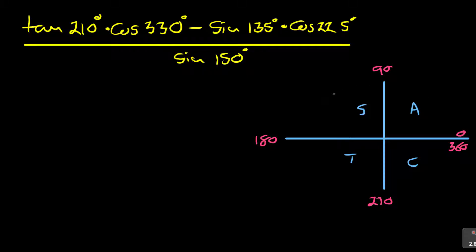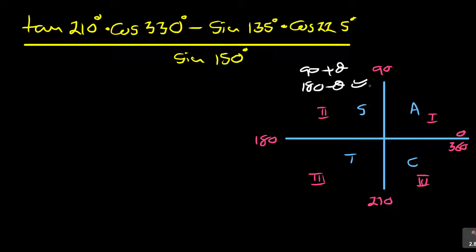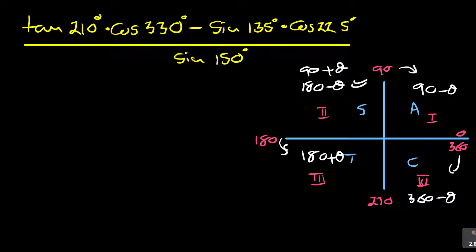These are reduction rules. We have the first quadrant, second quadrant, third quadrant, and fourth quadrant. In the second quadrant it's 180 minus theta (or 90 plus theta). After 180, we say it's 180 plus theta. Before 360, it's 360 minus theta. Before 90, you can write 90 minus theta. These are the reduction rules, and then you can simplify.